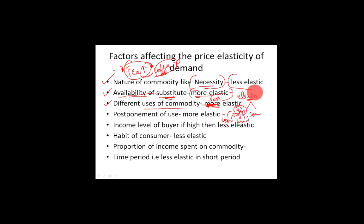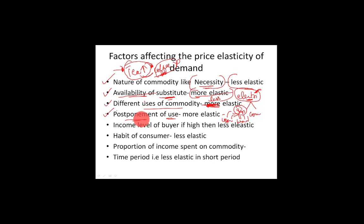Electricity is also a kind of necessity — if the price increases across all uses, demand still remains. Fourth factor is postponement of use. For example, if you want to purchase a bike and you think you will get a discount during Diwali — which is 3 to 4 months away — you postpone the purchase. If you are postponing use, demand is more elastic. But if you know there will be no discount in the future, you don't postpone and demand is less elastic.